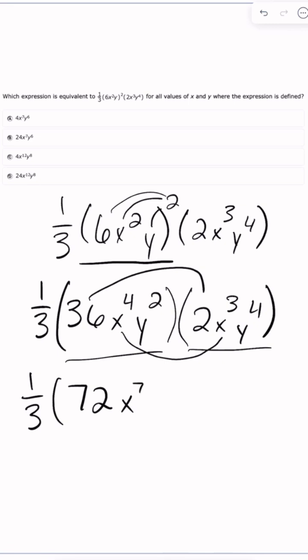And then we have y squared times y to the fourth. So again, we're going to add these exponents. So 2 plus 4 is 6, so I'm going to have y to the sixth power.